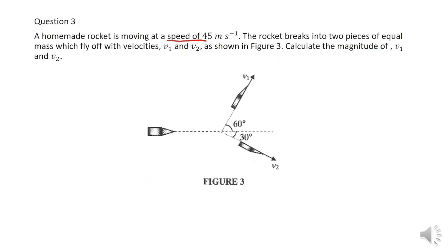Proceed with question 3 where we have a homemade rocket moving at a speed of 45 meters per second. It breaks into two pieces of equal mass. We need to find the magnitude of V1 and V2. Let the mass of the rocket be M, so once it breaks, it will be half M for both pieces.